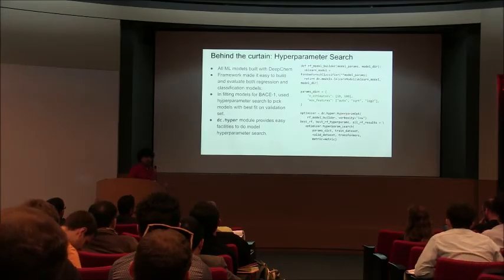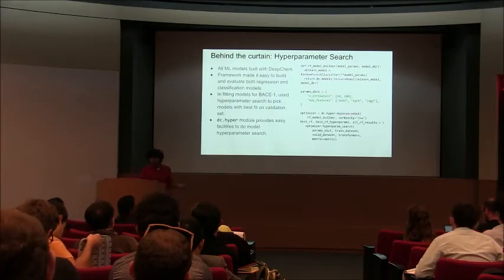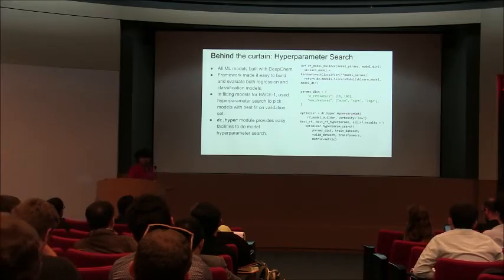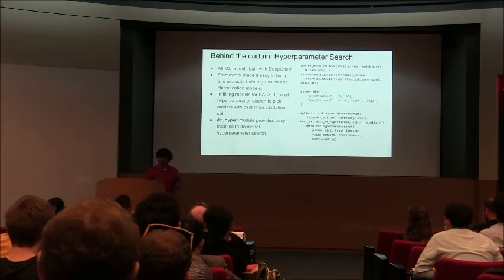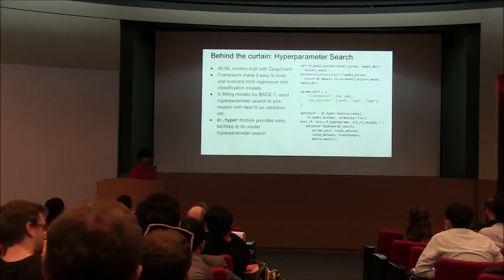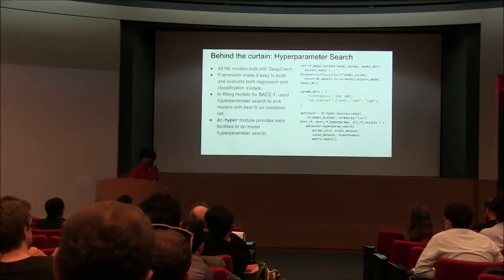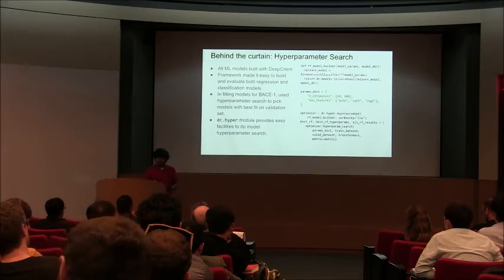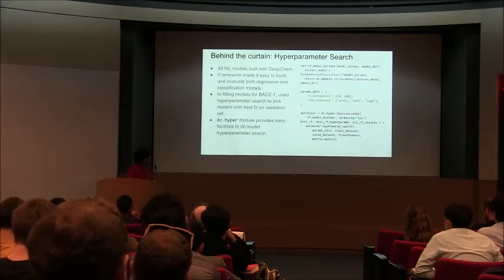Behind the scenes in terms of software: this is the simple DeepChem script we used to build these models. We defined various scikit-learn models, used the DeepChem hyperparameter searching utility to search over various model parameters defining the machine learning architecture, and evaluated the models. The fact that we could swap between various machine learning models and various evaluation methods — quantitative or classification — in about three lines of code made it very easy to develop and design these models.